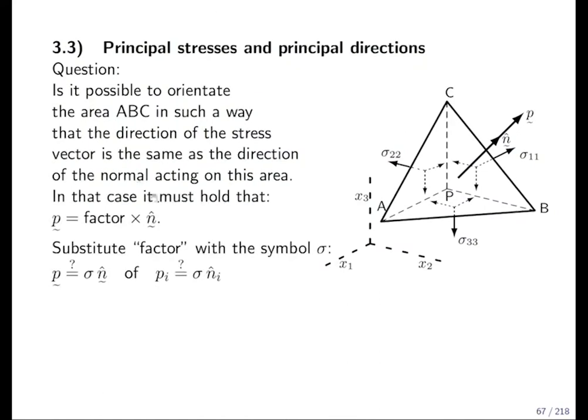Now, the question can be rephrased in mathematics. Is it possible to find P such that P is a factor multiplied with the normal unit vector? The factor is the norm of the vector. The unit vector is the direction. So we talk about vectors as in the previous sections. Factor is the norm of P, and N is the direction. And the cross here is not the cross product. It's just indicating a multiplication. What is the unit of P? What is the unit of N? And then you know what is the unit of factor.